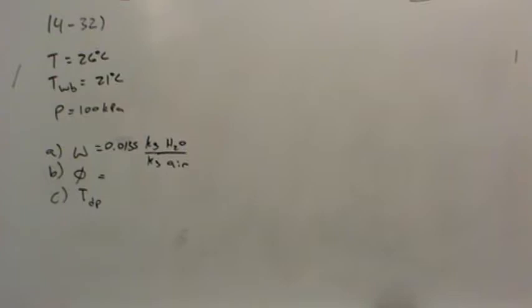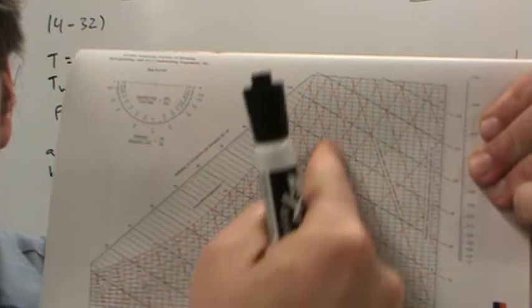Just read it off. Notice that the lines of constant relative humidity are lines that run this way. Okay, they're kind of curved, and they run down the page. So they have a positive slope, I guess you'd say.